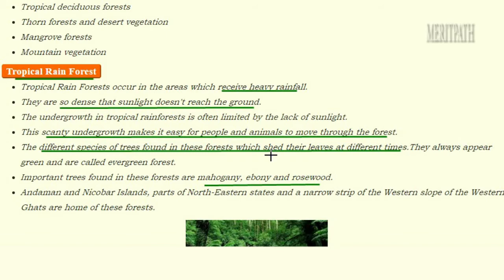Different species of trees are found in this forest. In most forests, trees shed their leaves once a year during the fall or autumn season. But in tropical rainforests, the trees shed their leaves at very different times, so they always appear green. That is why they are known as evergreen forests.